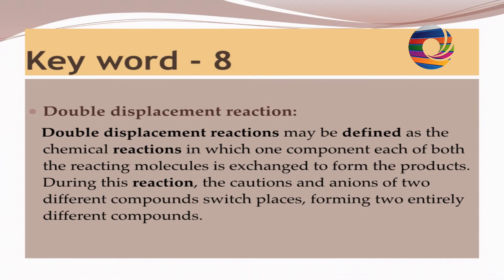Keyword: Double Displacement Reaction. Double displacement reactions may be defined as chemical reactions in which one component each of both the reacting molecules is exchanged to form the products. During this reaction, the cations and anions of two different compounds switch places, forming two entirely different compounds.